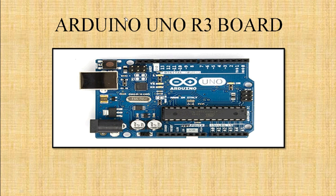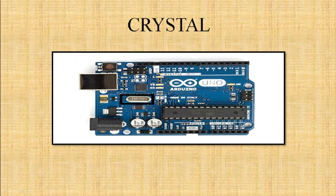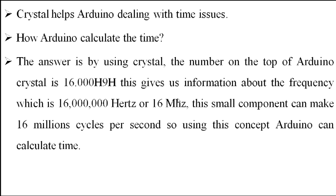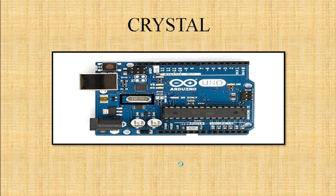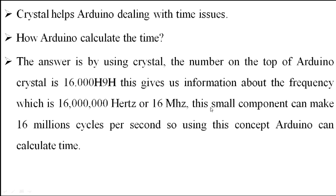The first component is a crystal. Arduino deals with time issues and calculates time using the crystal. The number on top of the Arduino crystal — 16 — is the frequency of the crystal, that is 16 megahertz. This small component can do 16 million cycles per second, and using this concept Arduino can calculate time.